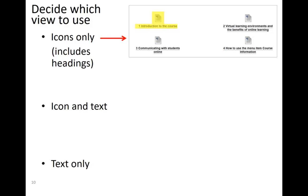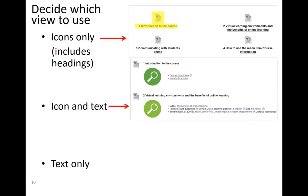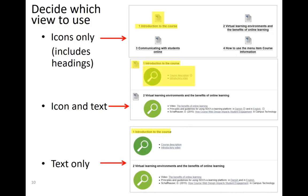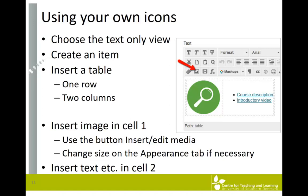Then we have the Icon and Text view, which displays both the Blackboard icon, the heading, and the actual text that you typed into the item. Finally, we have the Text Only option, which displays the heading and the text you typed in. In this particular course we're using the Text Only view, which enables us to use our own icons instead of Blackboard's — in this way we hope to give our course a distinct look and feel.